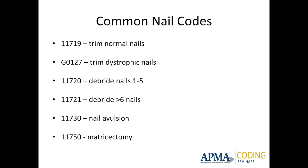So if you're using 11721 a lot, go back and look to see if you're really doing that correctly. You can combine 11720 with 11719 or G0127 on the same patient, but they need different diagnoses — you use a dystrophic nail diagnosis for G0127 and 11719, and a mycotic nail diagnosis for 11720. Since 11720 pays you for up to five nails, you've still got the others you can get paid for by combining 11720 and 11719 or G0127.